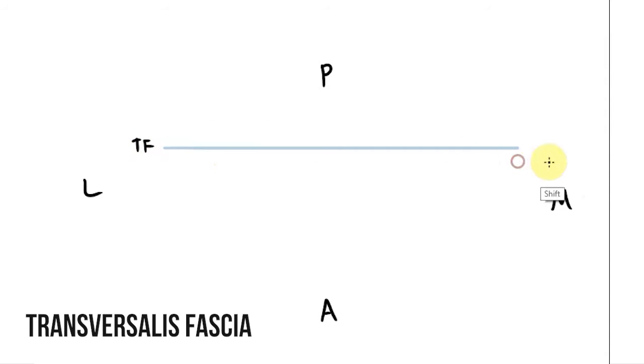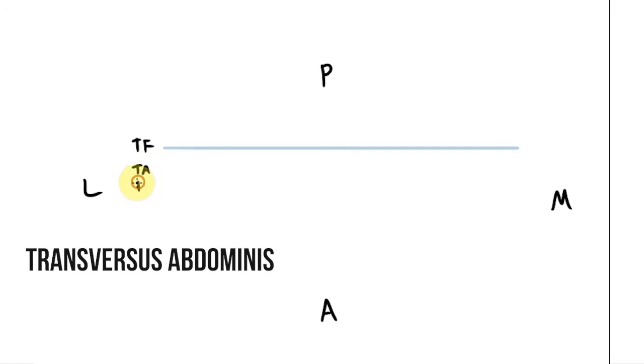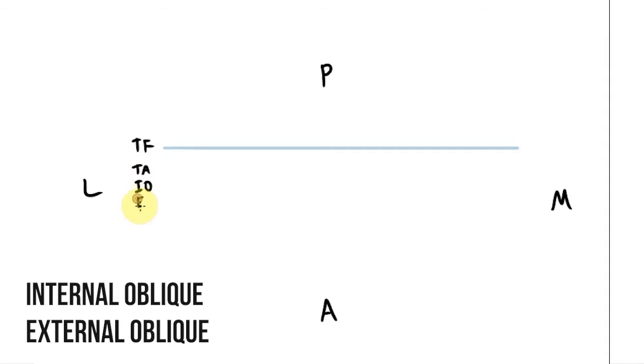The layers of the abdominal wall pass across this space. First we have the transversalis fascia which will be covered by peritoneum on its deep aspect. Then we have the three muscular layers, the transversus abdominis, the internal oblique, and the external oblique.